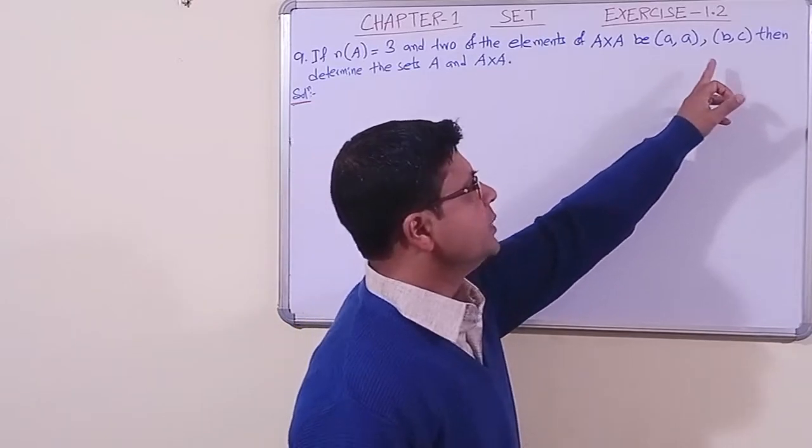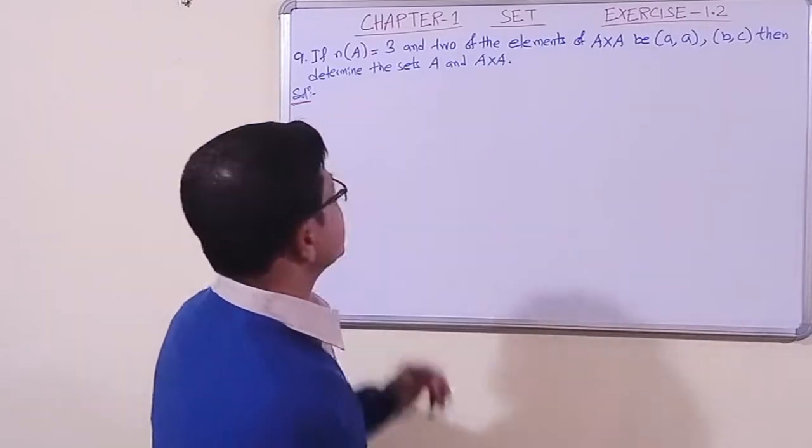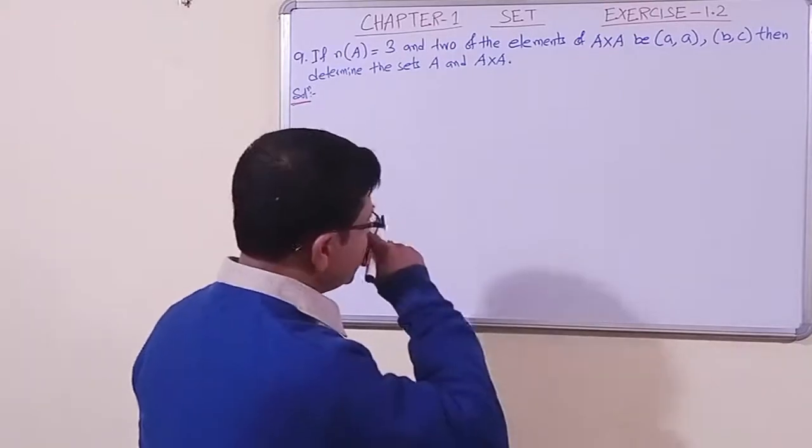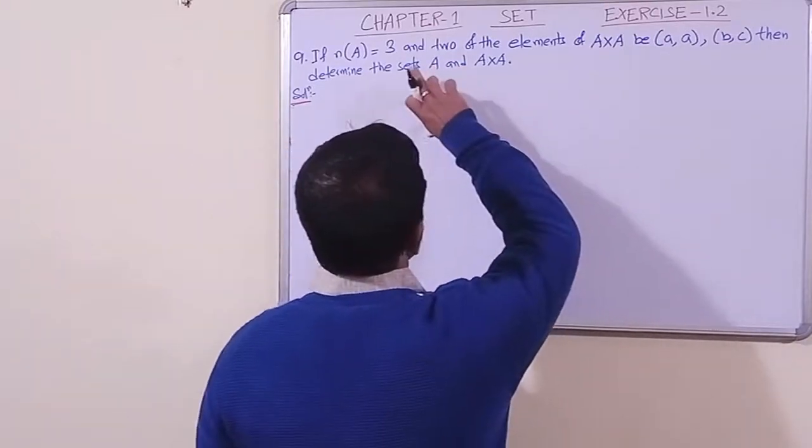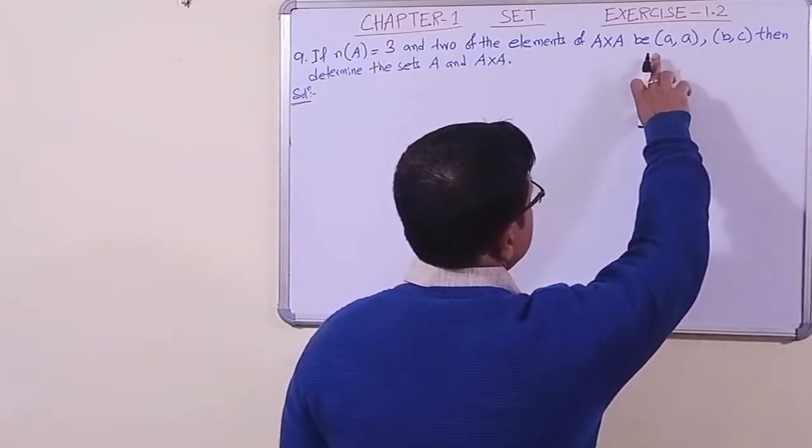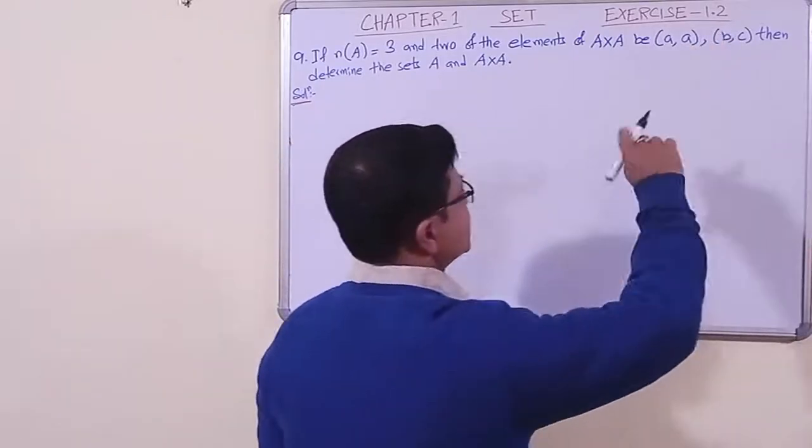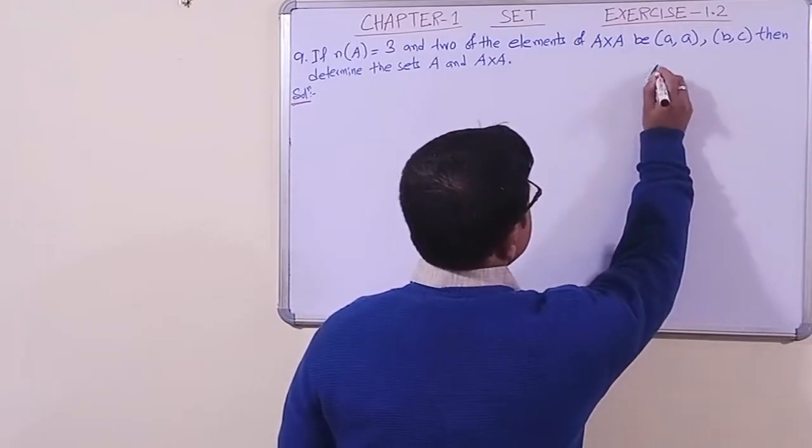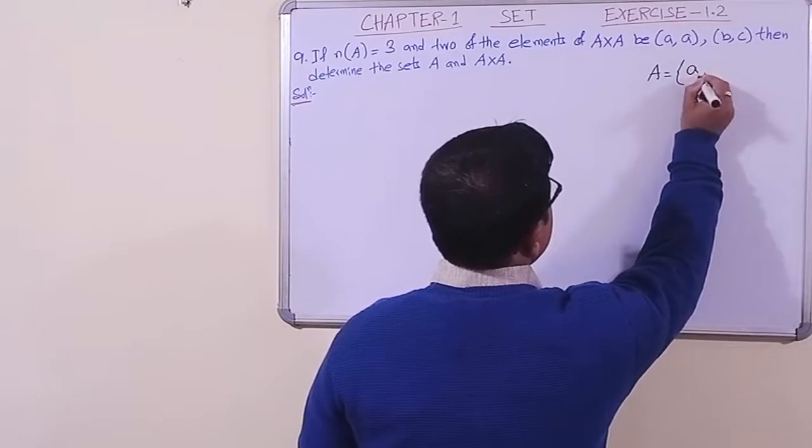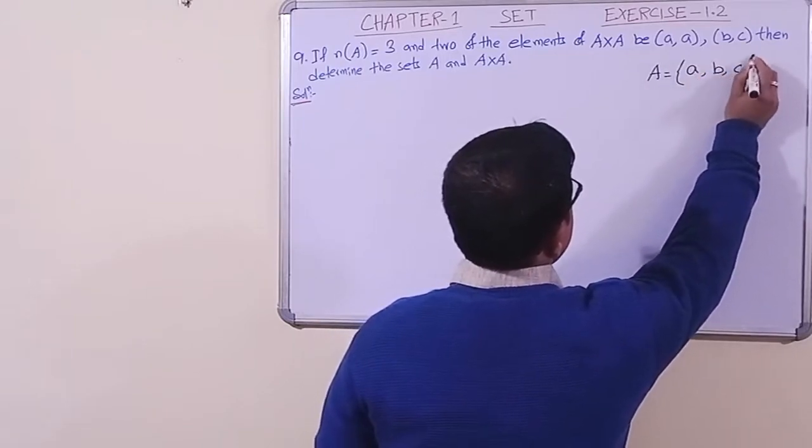The number of elements is 3. A cross A has elements (a, a) and (b, c). Now suppose set A, then here probably we can guess already a, b, c, okay.